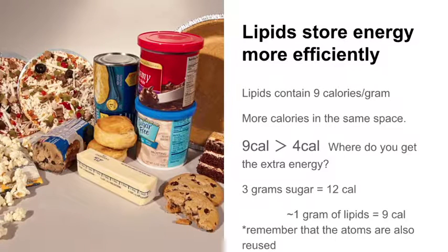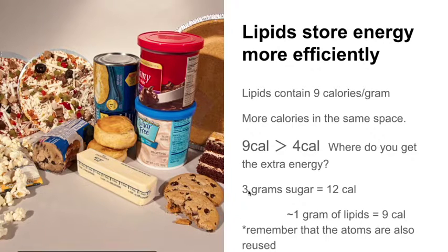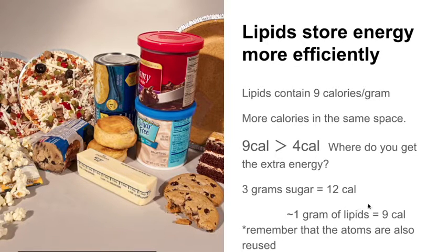Lipids — fats — are a slightly different story. Lipids can store energy much more efficiently. A lipid contains 9 calories for every gram, containing a lot more calories in the same space. So if you eat one gram of sugar, you would not be able to make one gram of lipids — you would need extra energy. Three grams of sugar would provide you with about 12 calories. Once you had those 12 calories released from sugar, you could capture that energy into a single gram of lipids. The atoms of sugar make the atoms of lipids, but you need two to three times as much energy found in sugar to make a single gram of lipids, which has 9 calories.